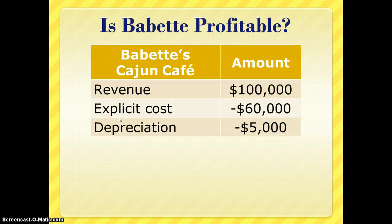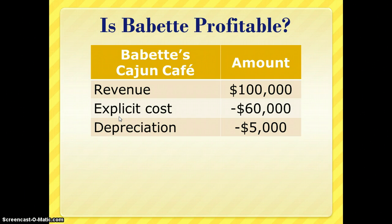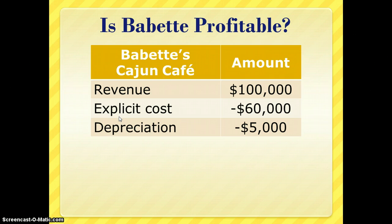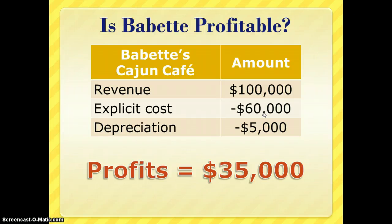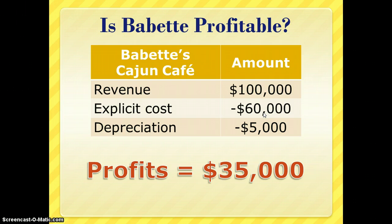As an example, consider Babette and her Cajun Cafe outside New Orleans. Her cafe provides $100,000 in revenue, she has $60,000 in explicit costs, and machinery depreciated at $5,000 per year. From an accounting perspective, Babette has an accounting profit of $35,000 — total revenue of $100,000 minus total costs of $65,000. But is Babette making the right decision? To answer that, we need to know her implicit costs.